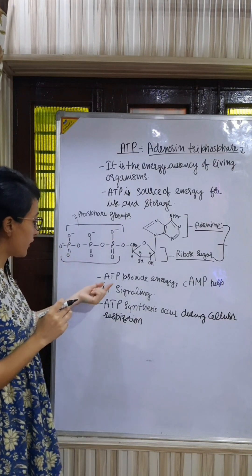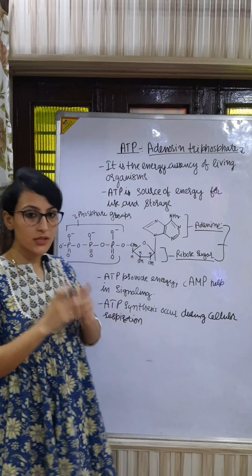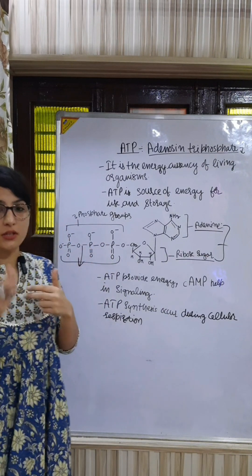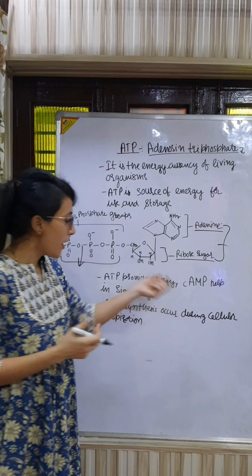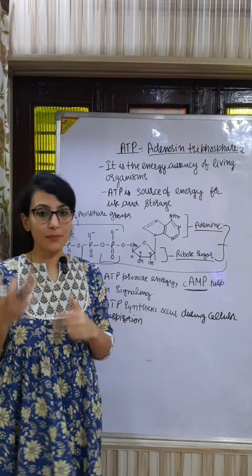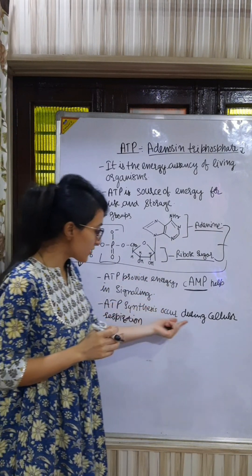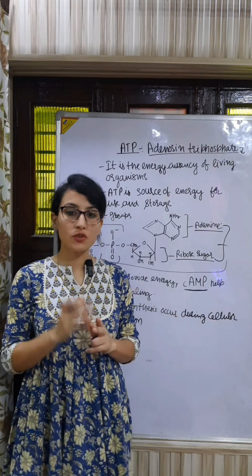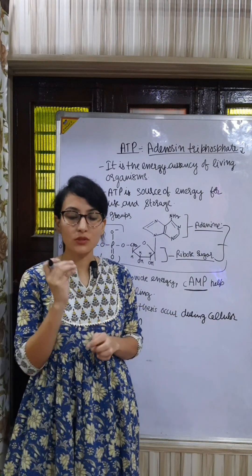ATP provides energy when a phosphate cleavage occurs, then high energy is produced. Cyclic AMP helps in cell signaling. ATP synthesis occurs during cellular respiration — glucose undergoes oxidation, starting with glycolysis.